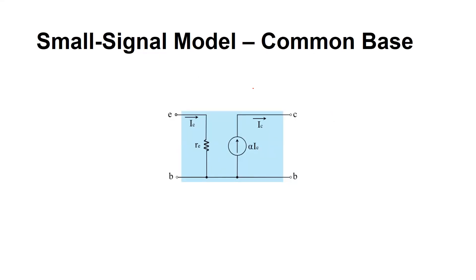We are going to analyze the small signal model for a BJT biased in a common base configuration. There is an equivalent model, but before analyzing this we can draw the circuit for a BJT in common base. We have an NPN transistor with three pins: collector, base, and emitter. The base is common, meaning it is connected to ground.